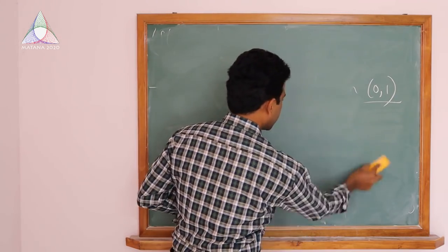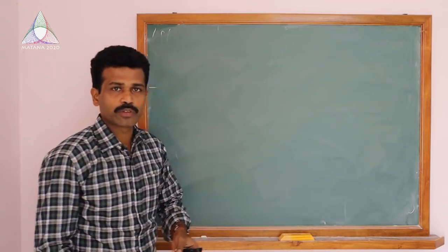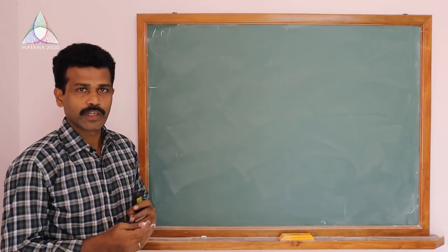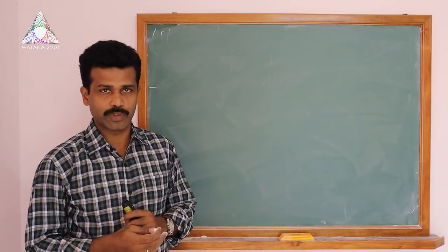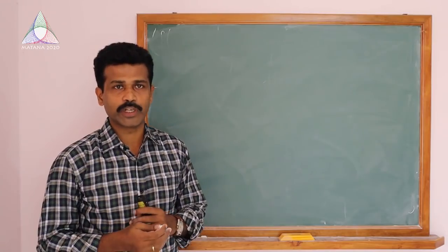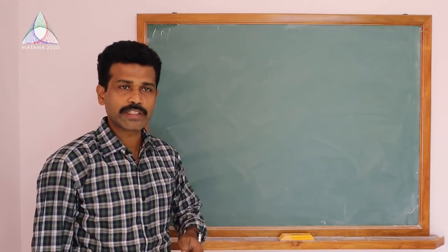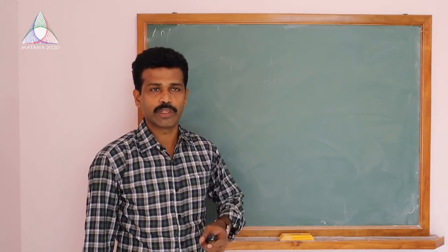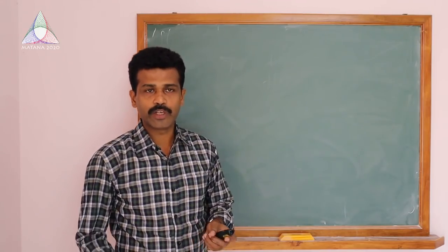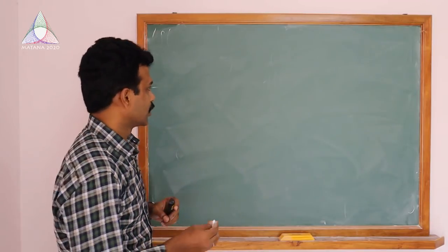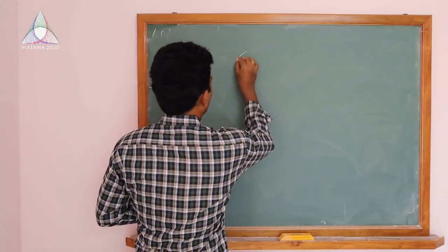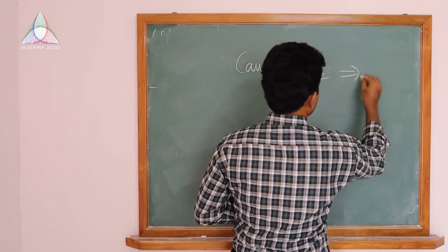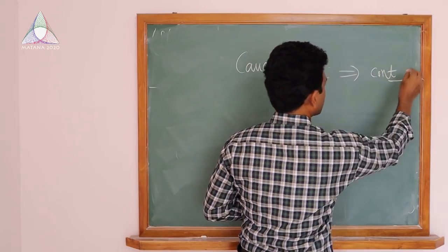Next we are going to see the definition of Cauchy continuity. A function carrying Cauchy sequences to Cauchy sequences is not enough to guarantee uniform continuity. If a function carries every Cauchy sequence in X to a Cauchy sequence in Y, then we say the function is Cauchy continuous on X. Every Cauchy continuous function is continuous.